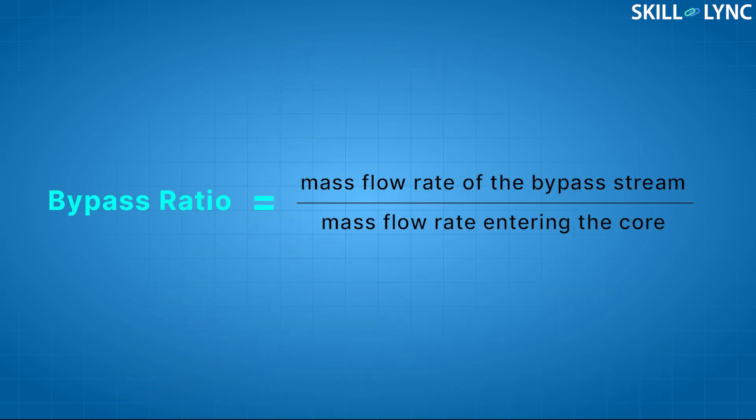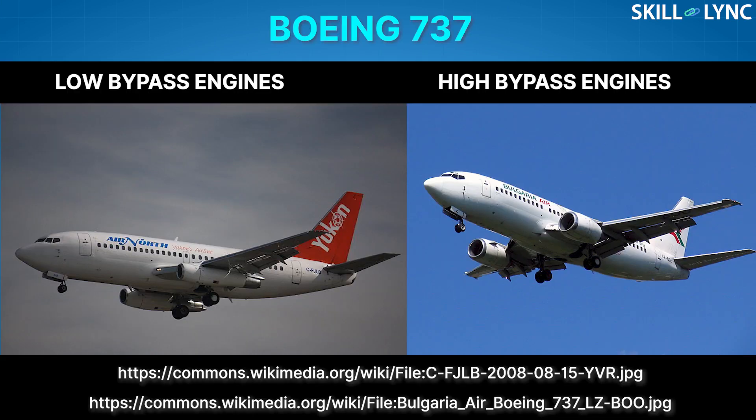The ratio of the air that goes around the engine to the air that goes through the core is called the bypass ratio. Turbofan engines are classified into two major categories based on this bypass ratio: low bypass turbofans and high bypass turbofans.